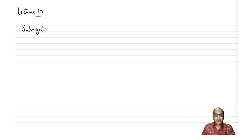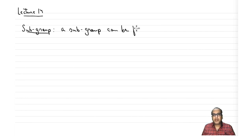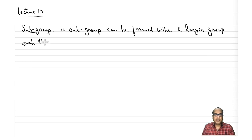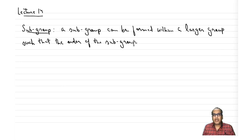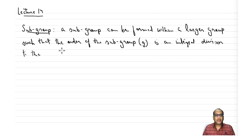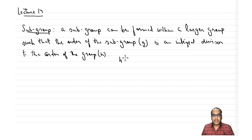So what is the definition for a subgroup? A subgroup can be formed within a larger group such that the order of the subgroup - let us call that order g - is an integral divisor of the order of the group, which is h. In other words, if you take h divided by g, this should be equal to k, where k is an integer.